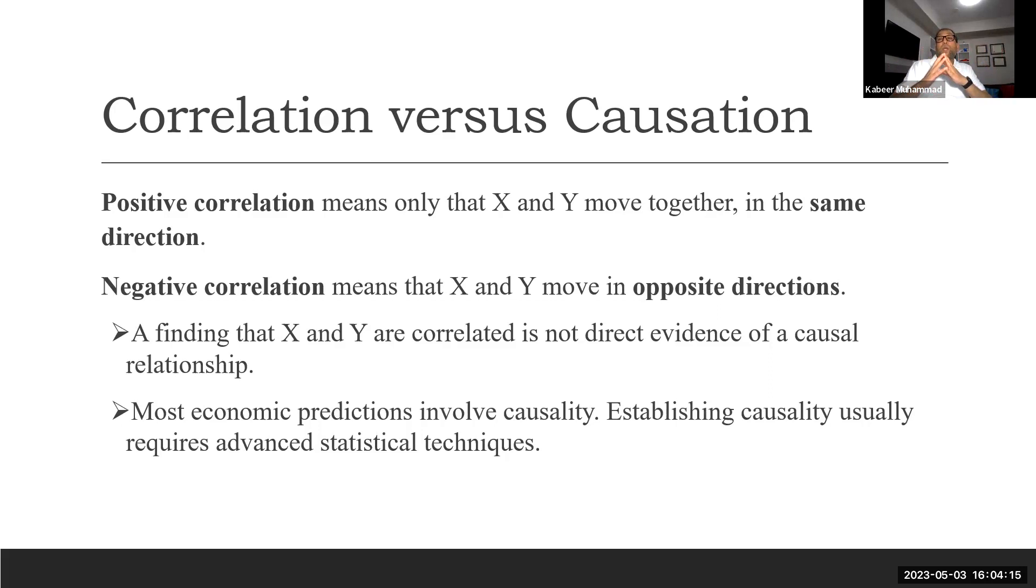We can read the data in this way as well, that as the number of police officers are increasing, the crime rate is increasing. But this reading is not correct. The correct reading is that as the number of crimes is increasing, we need to increase the police officers and that's why the police officers are increasing. The variables are there. They have a positive correlation. But we have to see which one is the cause and which one is the effect.